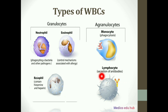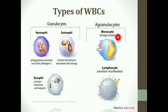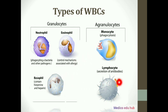Next is lymphocytes: lymphocytes help in the secretion of antibodies. So, in overview, whether it is neutrophils, eosinophils, monocytes, basophils, or lymphocytes — all of these WBC types help in protecting our body.